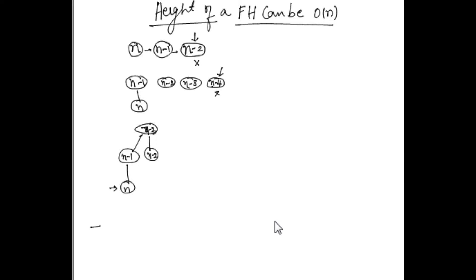We will do a sequence of operations so that in the next iteration the height of the tree again increases by 1. What we do is decrease the value of n minus 2 to n minus 4. When we decrease this value, the node is cut and added to the root list with value n minus 4. Now we can add n minus 2 and then add n minus 5. Now we can delete this node. When we delete it, n minus 4 becomes the root and n minus 2 becomes its child. This is a Fibonacci heap with rank 1, and there is already another Fibonacci heap with rank 1, so both will be merged.